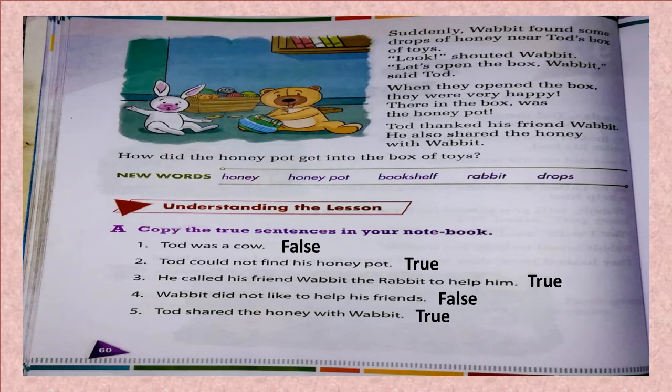Number five: Todd shared the honey with Wobbit. This is true — Todd shared the honey with Wobbit. Write true and false as shown in this video in the textbook itself. Read the sentences carefully.